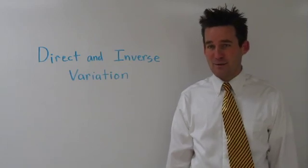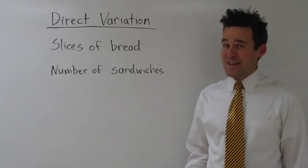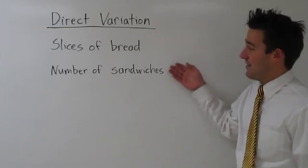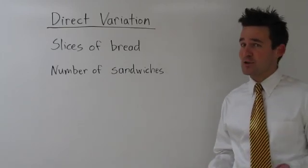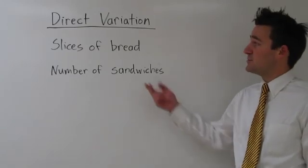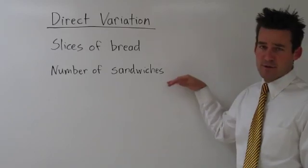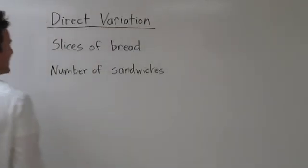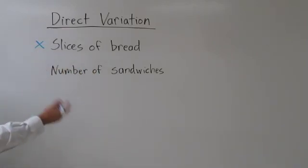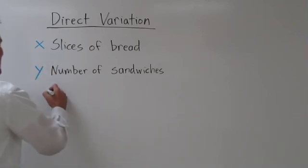Hi, I'm Kendall Roberg, and today we're going to learn about direct and inverse variation. Let's start with an example of direct variation. Slices of bread and the number of sandwiches you can make are directly related, if we assume that it takes two slices of bread to make a sandwich. Let's give these two variables names. Let's call the number of slices of bread you have x, and the number of sandwiches you can make y. And let's make an xy table.